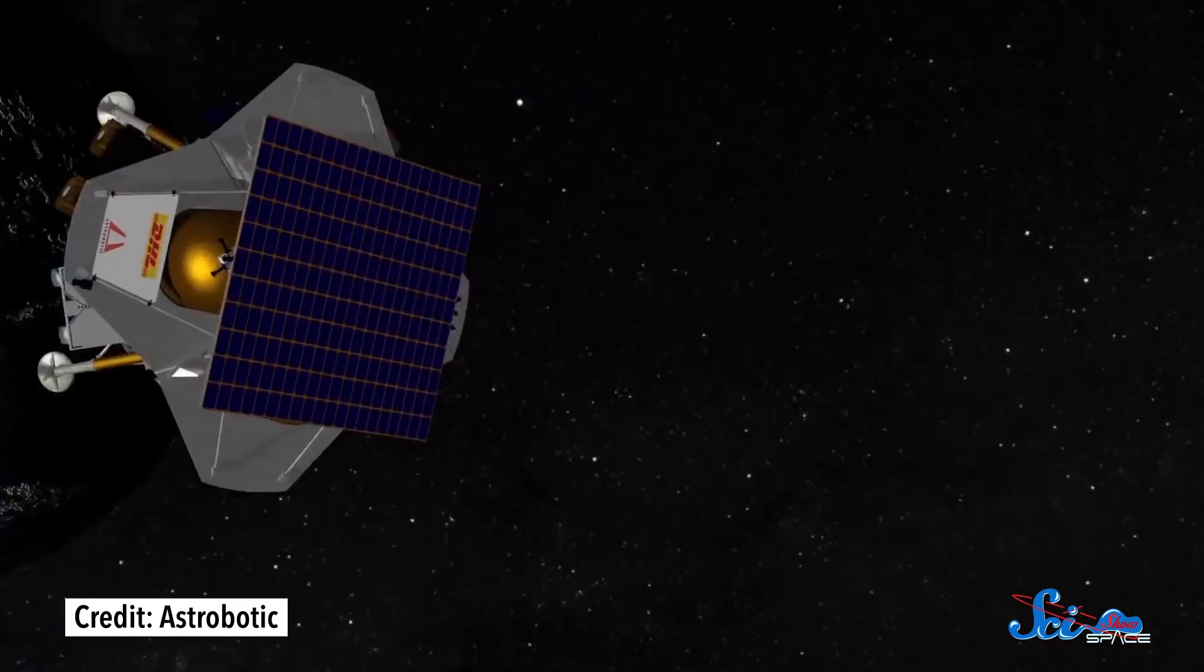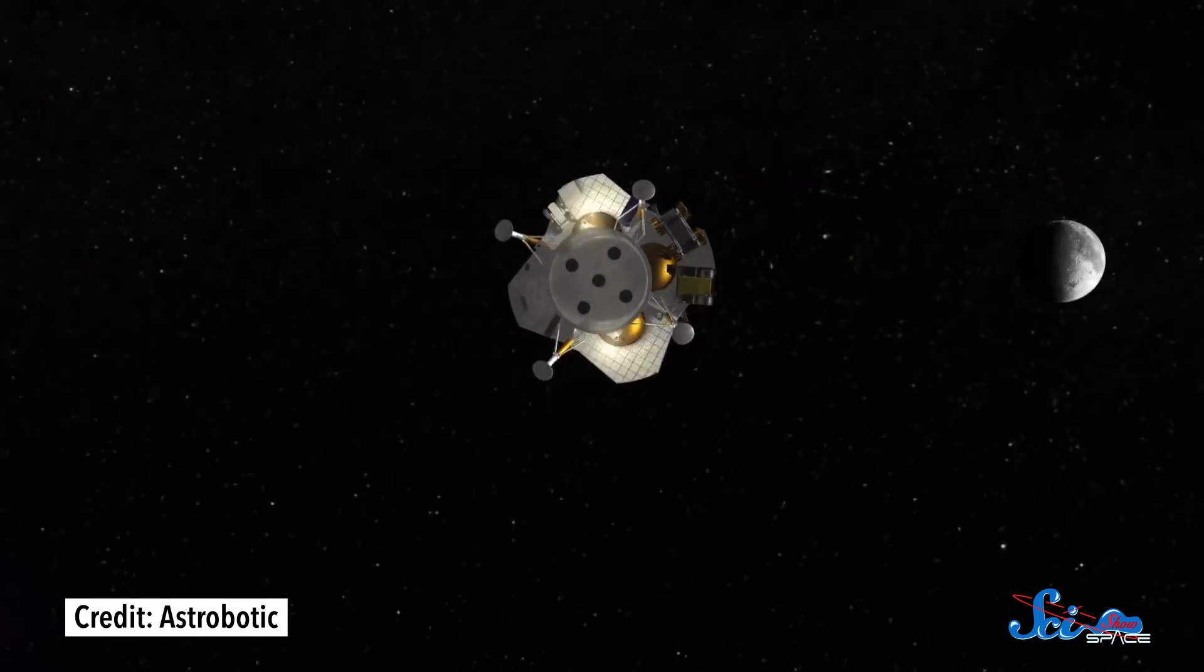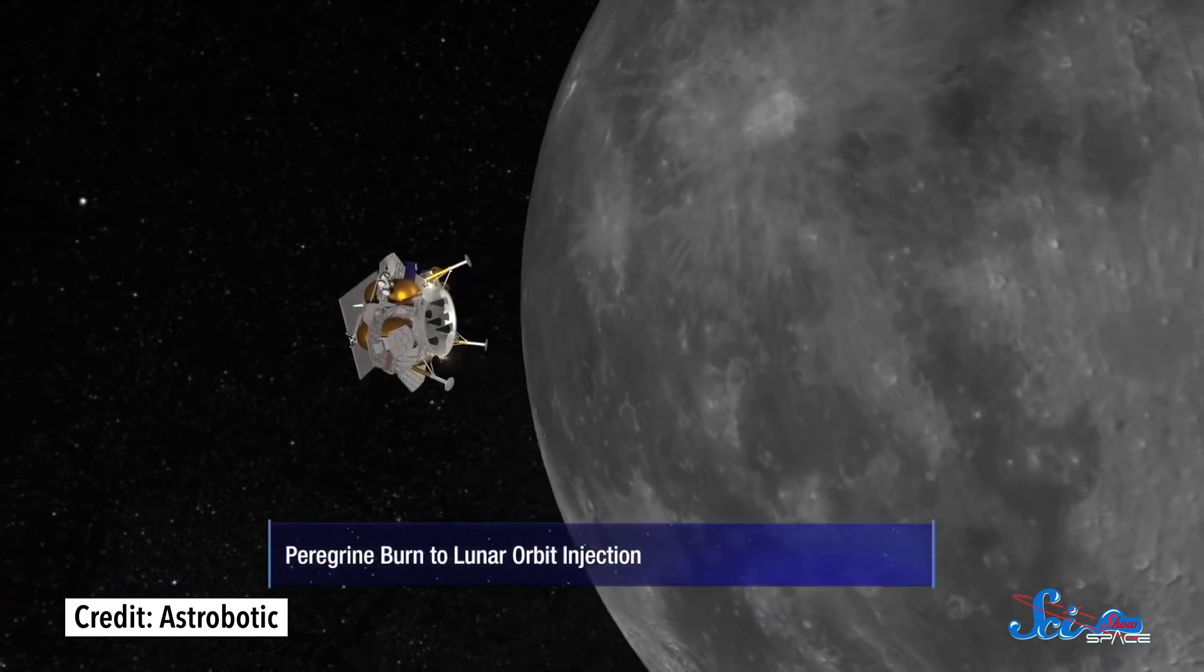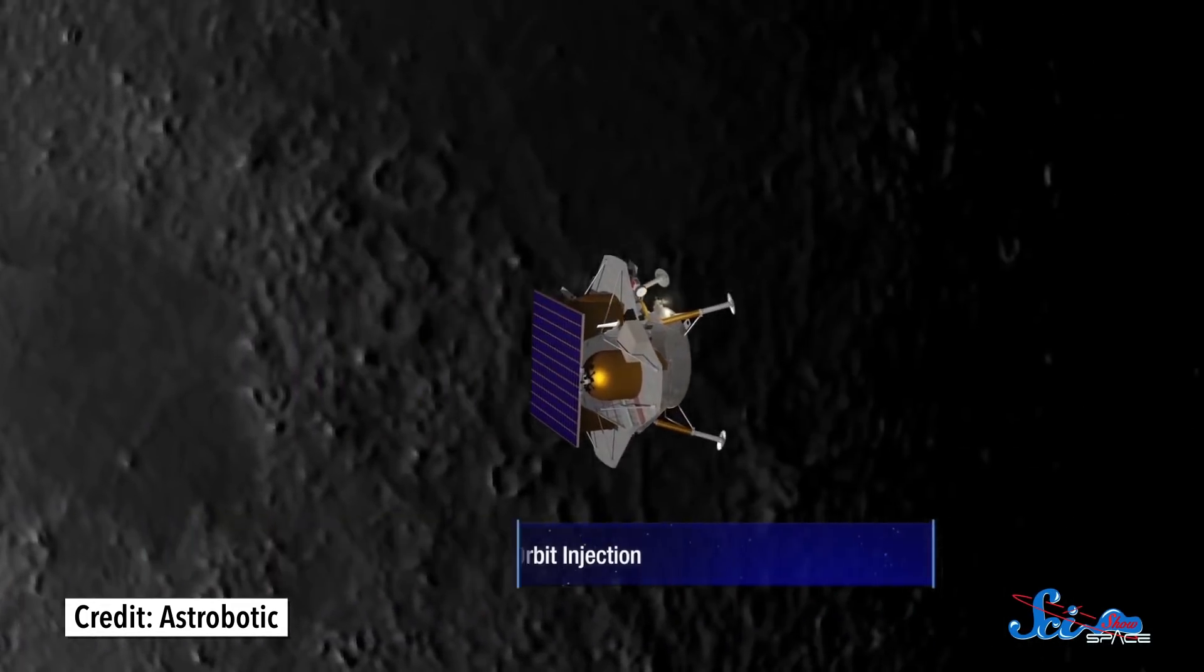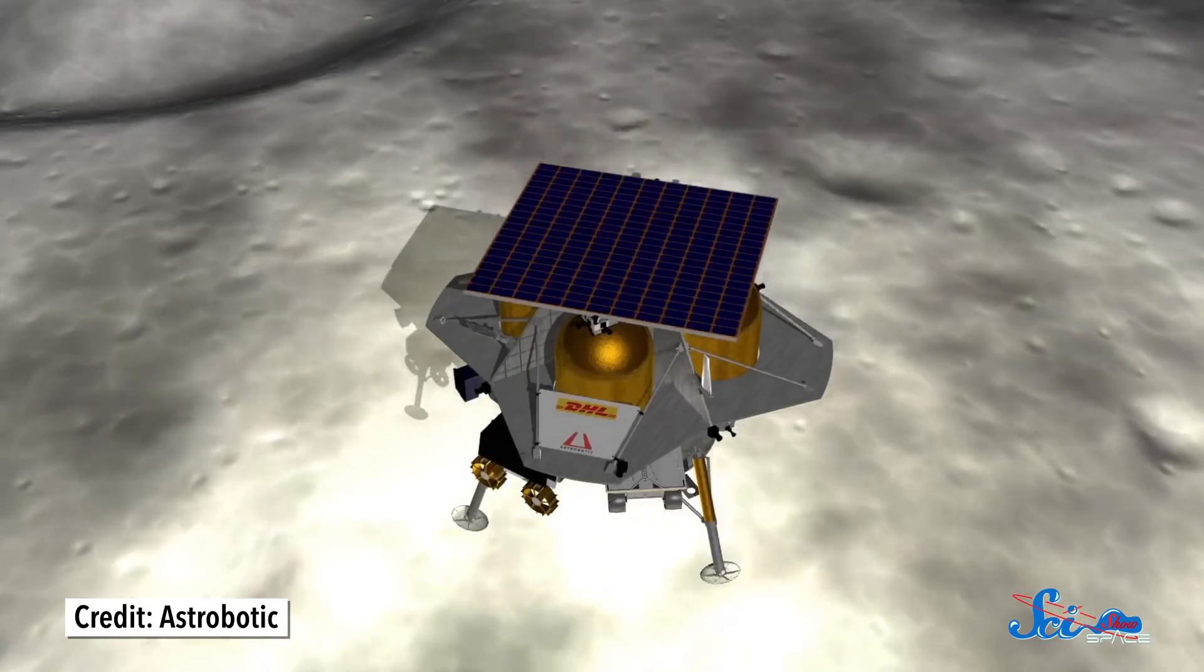In 2021, a single Spacebit rover will travel to the Moon on a lunar lander from the company Astrobotic, along with more than a dozen other confirmed payloads, many of which are funded by NASA. Then, once our little robot buddy is on the surface, it will send back some high-def video and lidar data.